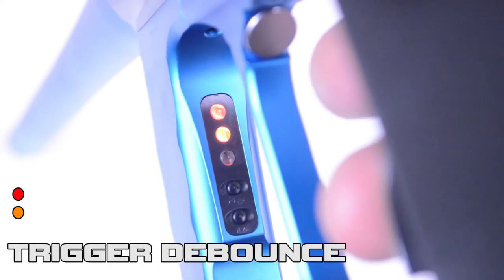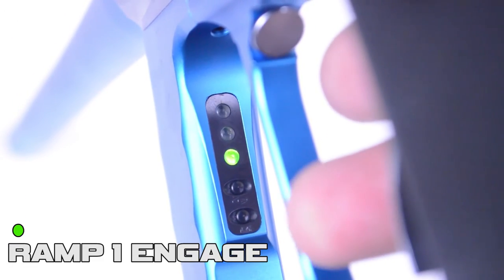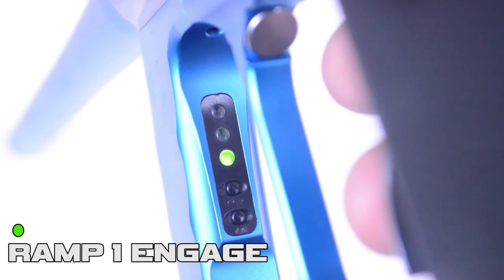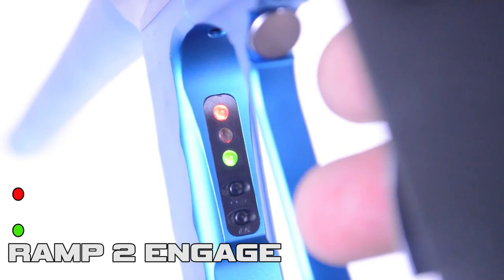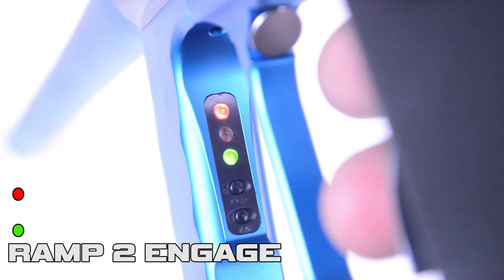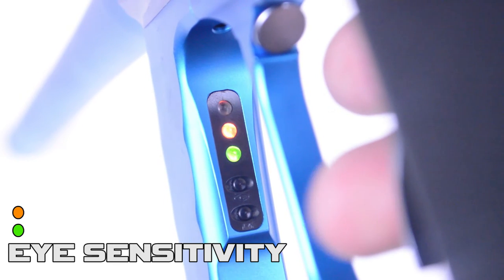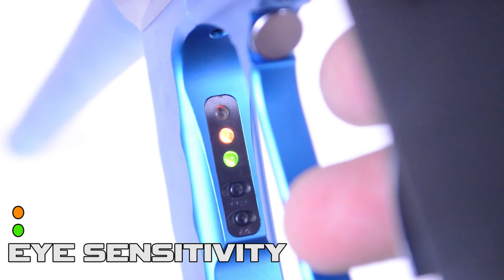The orange and red LEDs let you know you'll be adjusting trigger debounce. The green LED is for pulls per second on ramp one. The red and green LED is for pulls per second adjustment on ramp two. And the orange and green LED lights is for the ball and position accuracy or your eye sensitivity settings.